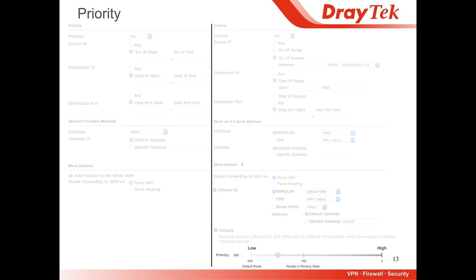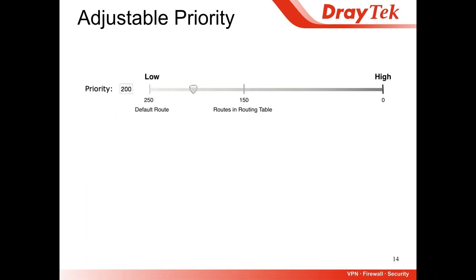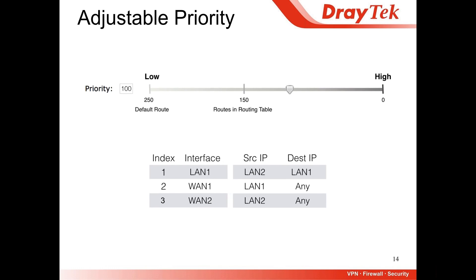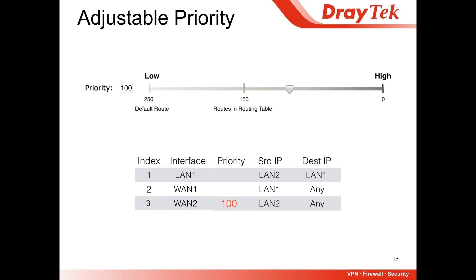The last feature is priority. Now you can configure the priority for each policy. If you drag to the right side, you can set the priority higher. If you drag to the left side, you'll have lower priority. In the new version, we put priority in so you can compare the priority for each policy. The general view will show the priority for you.